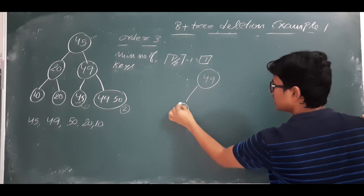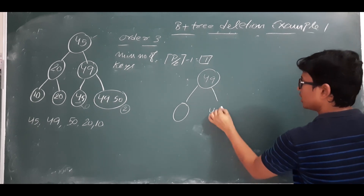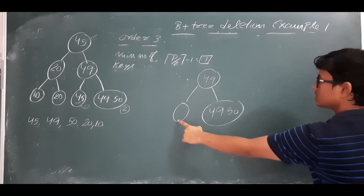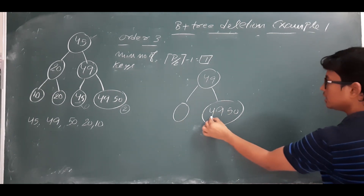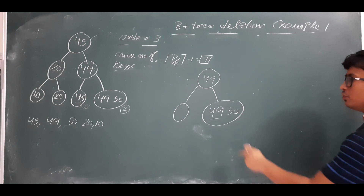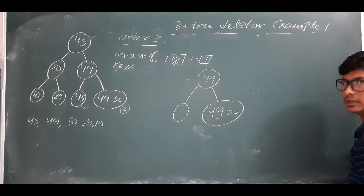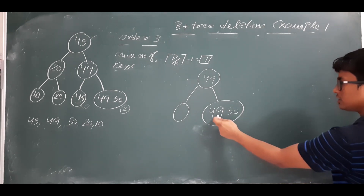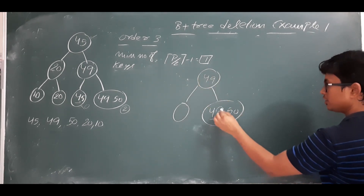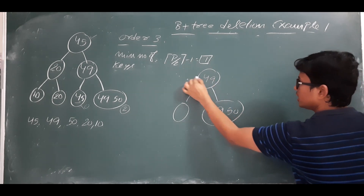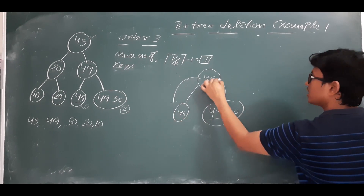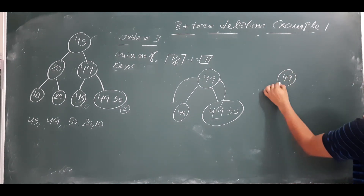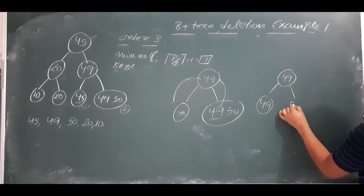After deleting 45, the node is empty. We want to borrow from the right sibling which has 49 and 50. We borrow the smallest element from the right sibling, which is 49. So 49 moves up to the parent and 49 comes down to the empty node — it looks like 49 | 49 — and the right sibling retains only 50.